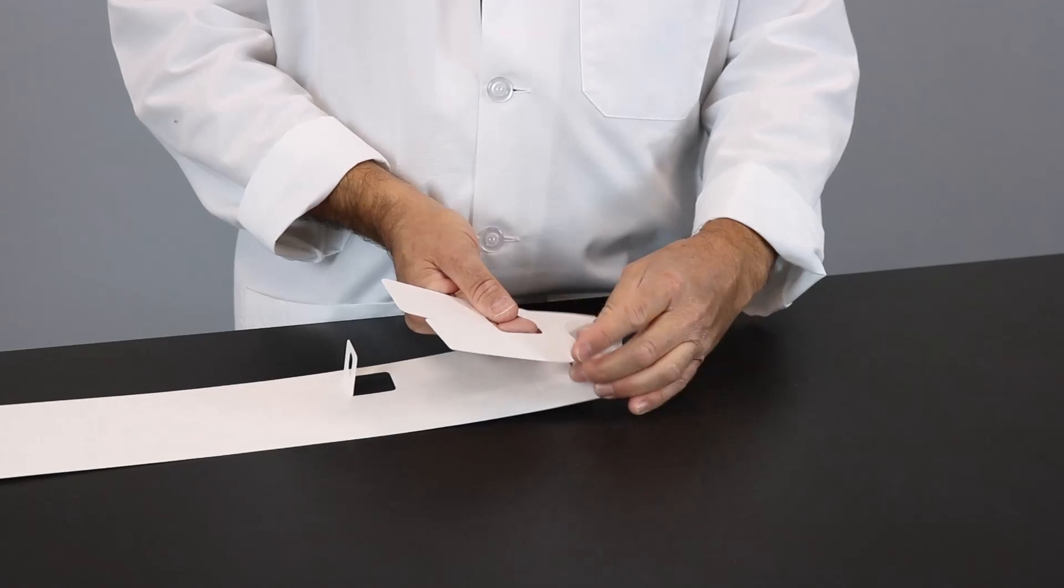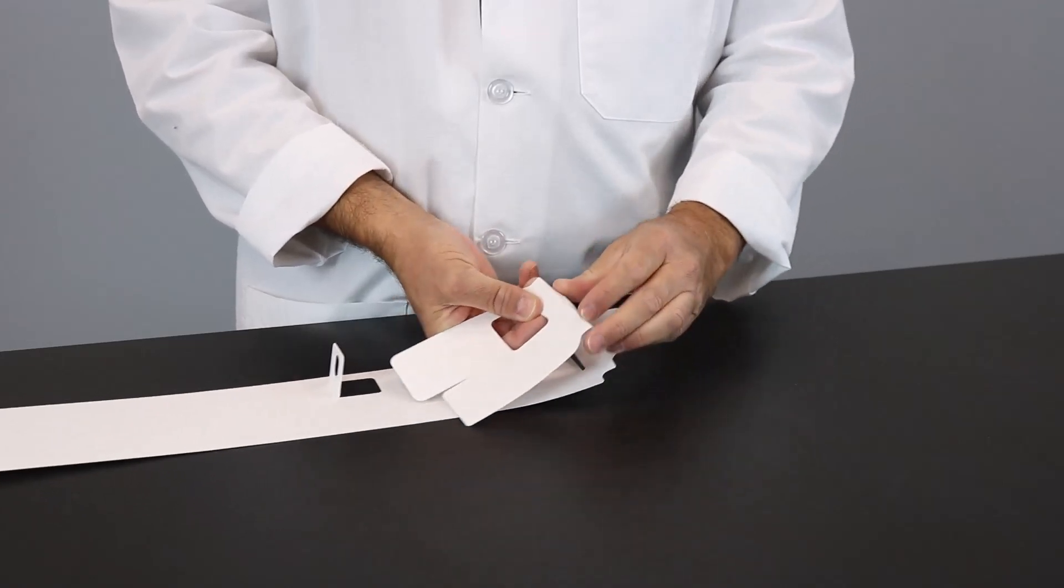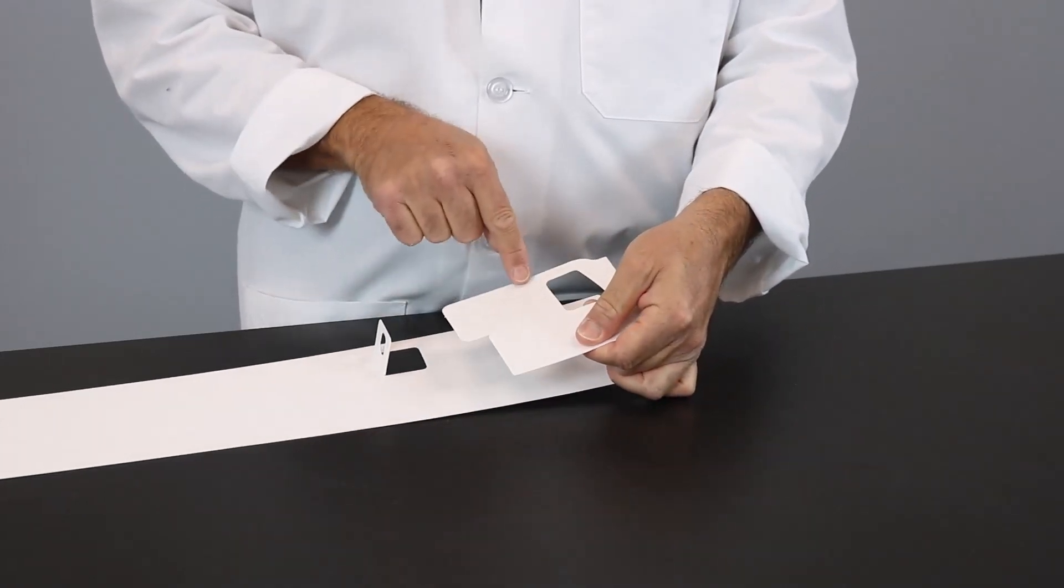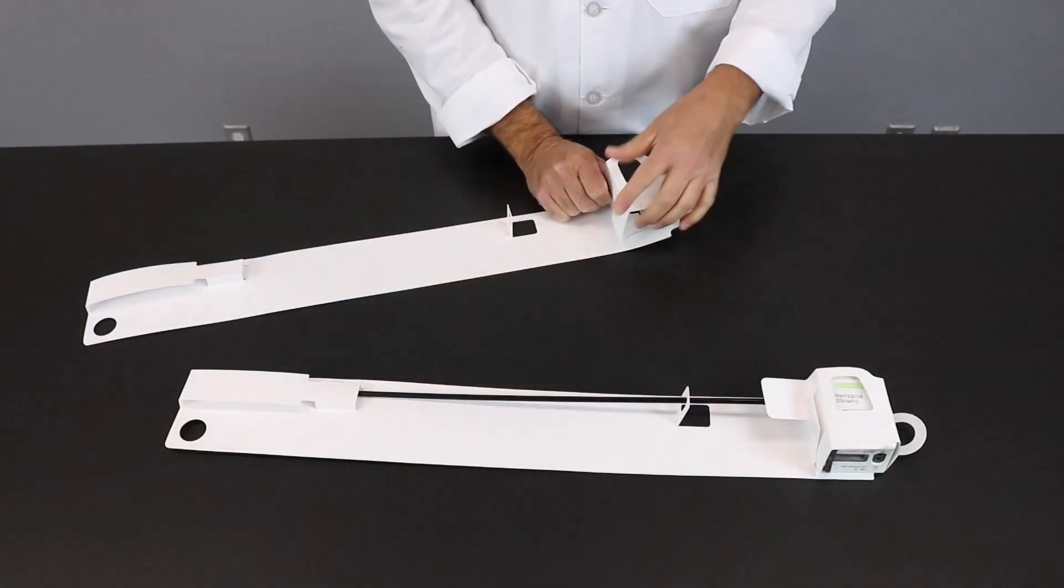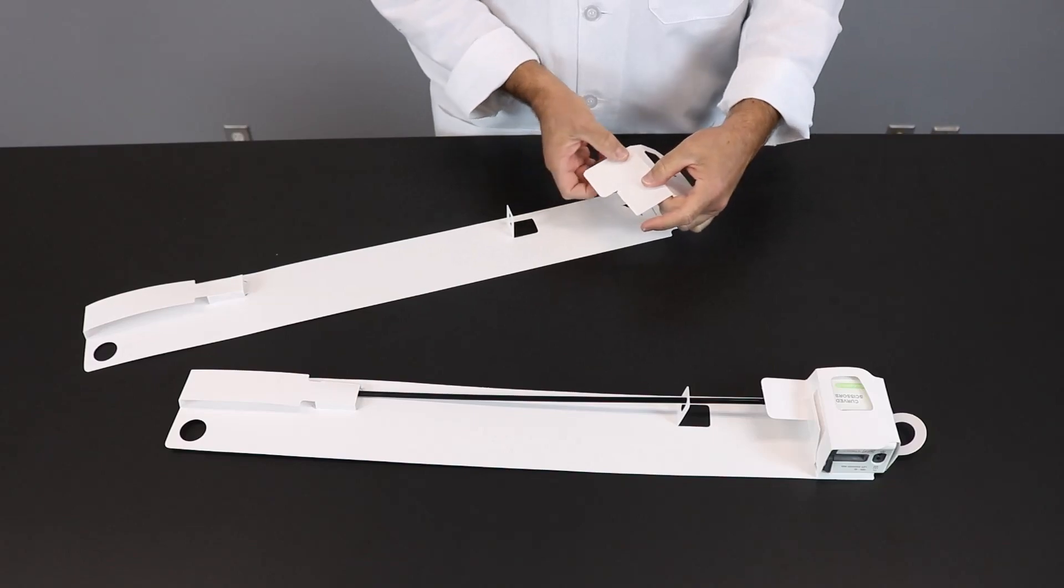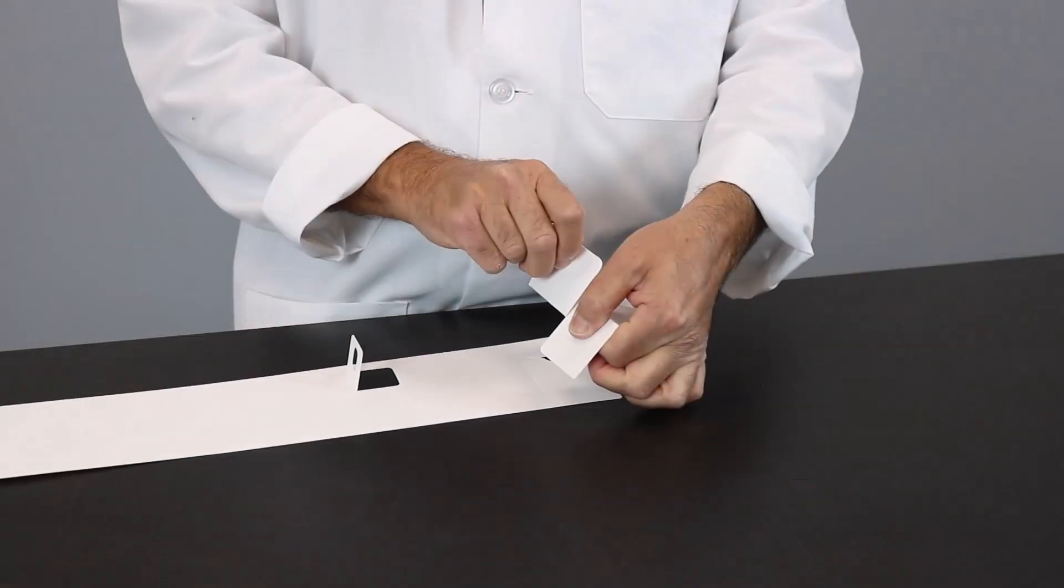Then we're going to take the housing flap and you're going to see two main creases here. So we're going to crease on that score line here, do the same for this one, and you can see it kind of forms a box. Then take this last one here in the locking tab and fold that up.